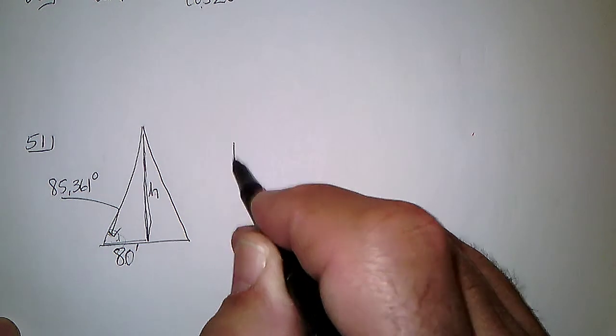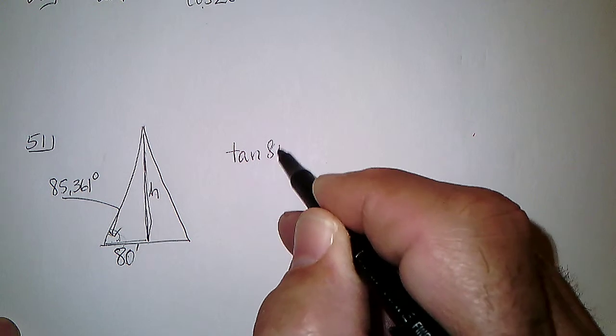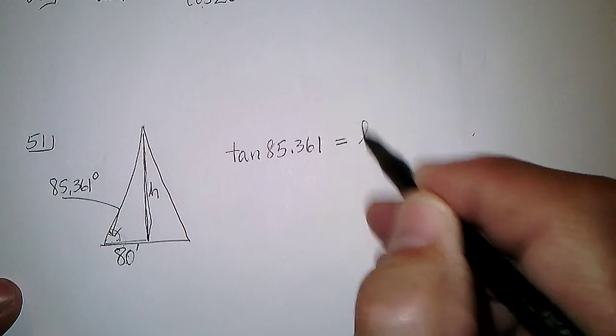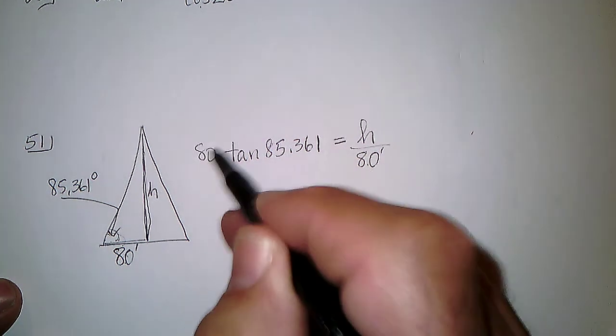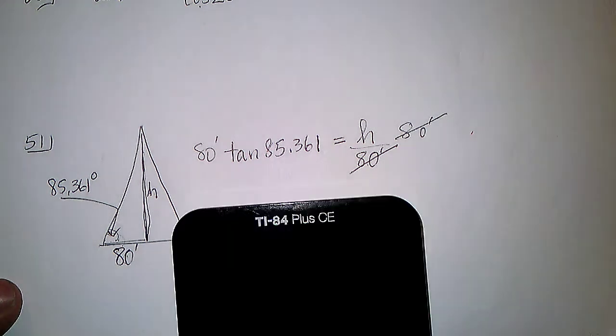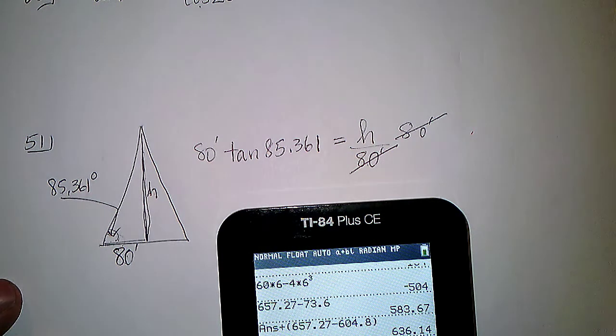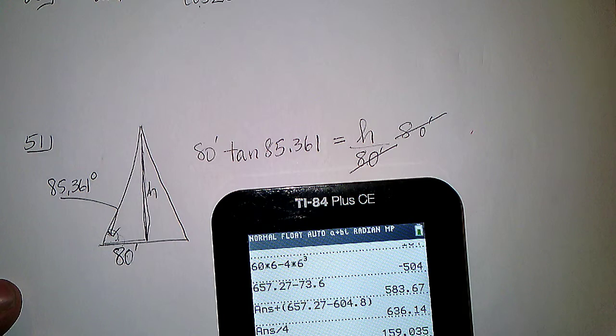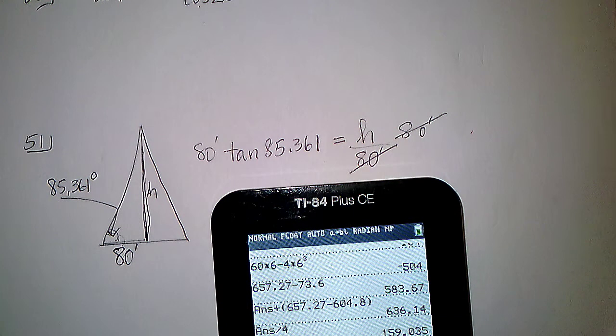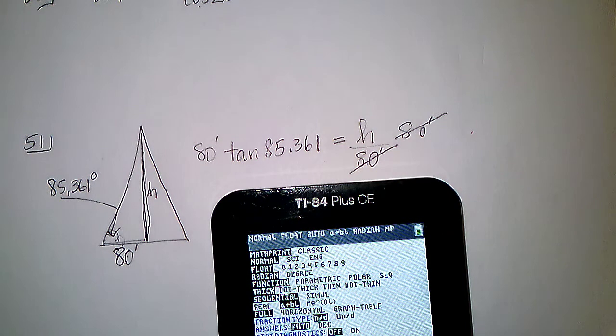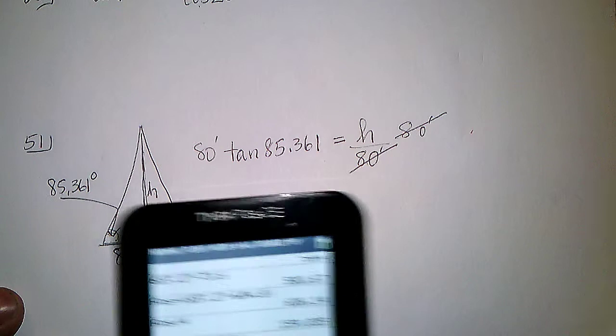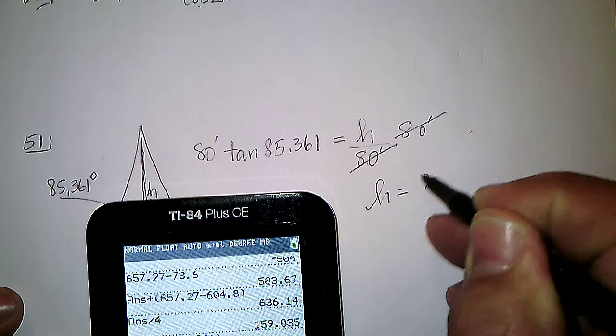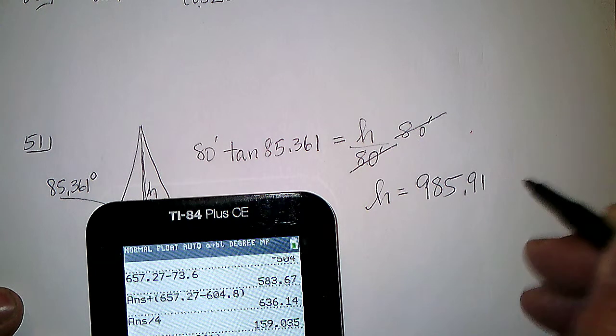So the tangent of 85.361 is opposite over adjacent, and the adjacent was 80 feet. So if I multiply both sides by 80 feet, I get the height of the Eiffel Tower to be 80 times tangent of 85.361. Now make sure I get this right, that was in degrees, so I better make my mode be in degrees. And I press enter, and I get 985.9 feet. The height is 985.91 feet.